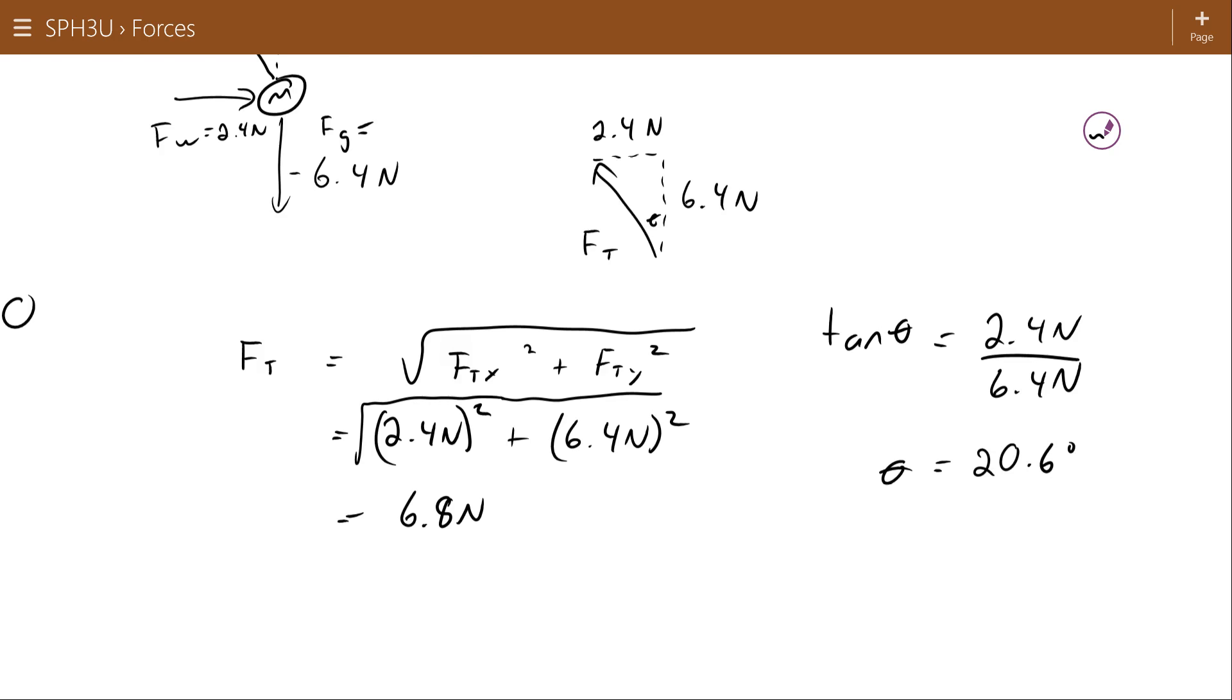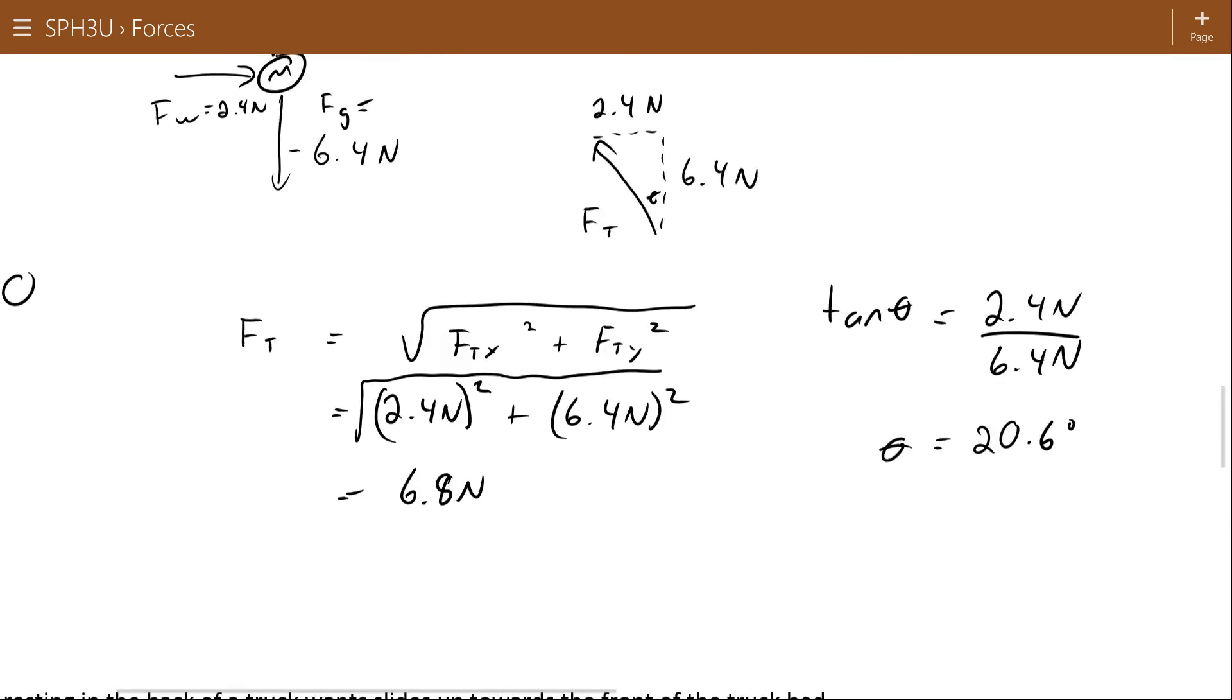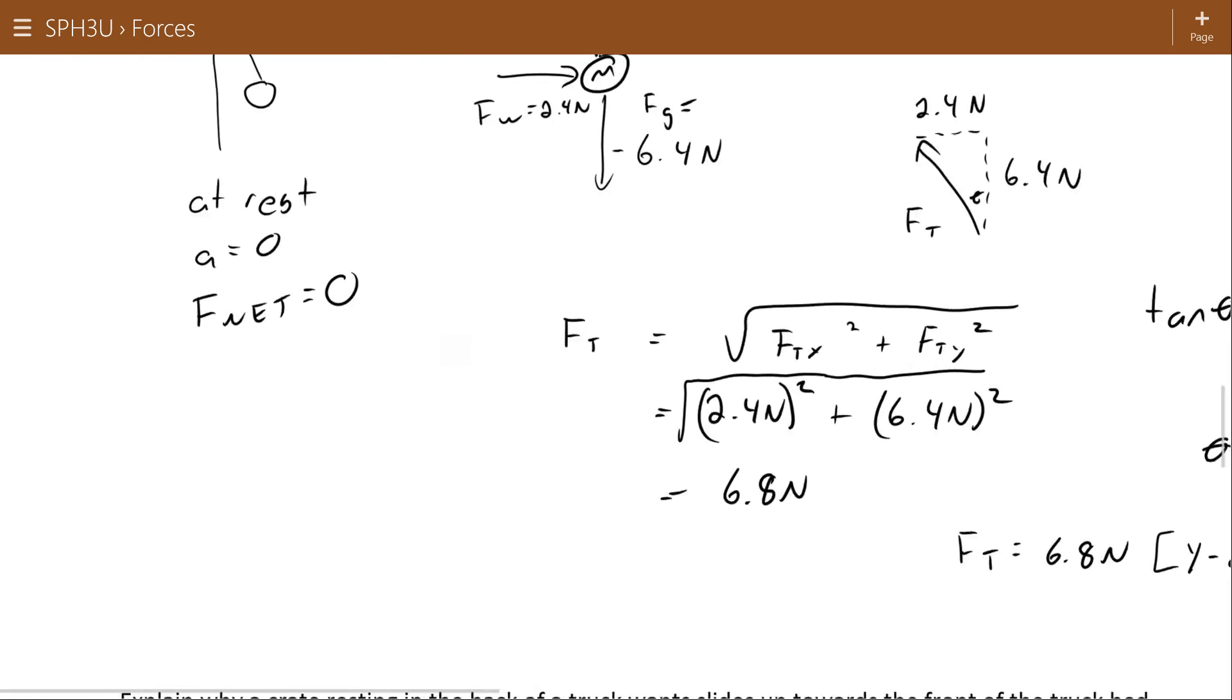So that tensile force that's balancing the force of gravity in the wind and allowing the ball to remain stationary has to be 6.8 newtons, negative 20.6 degrees from vertical. Or you could say 20.6 degrees from negative x, doesn't matter. So there it is.